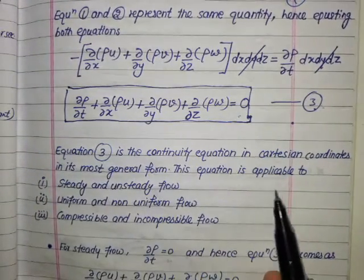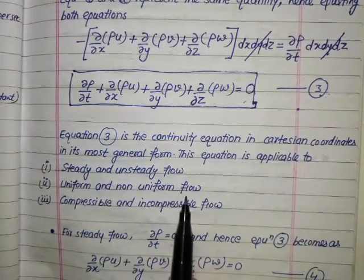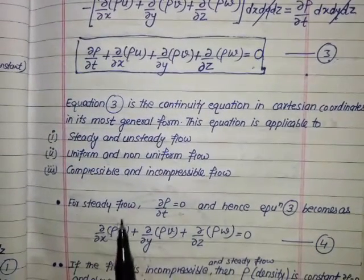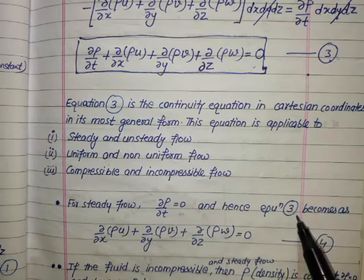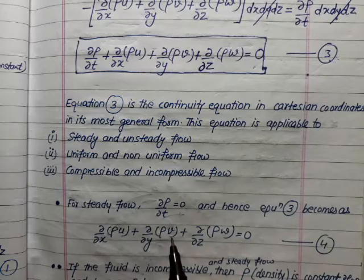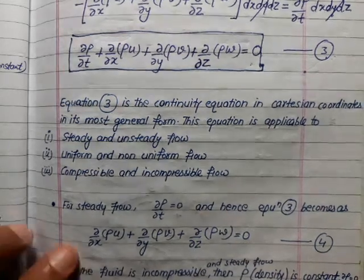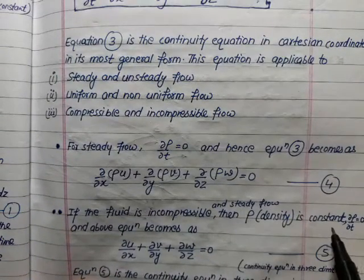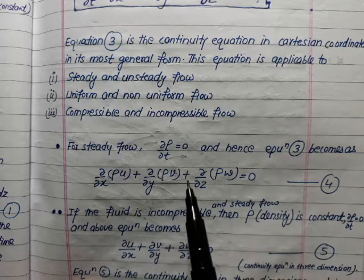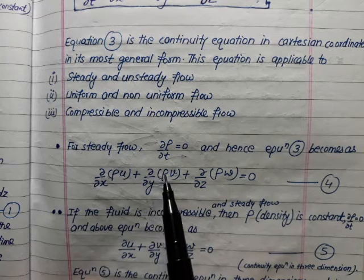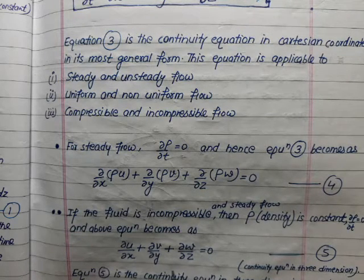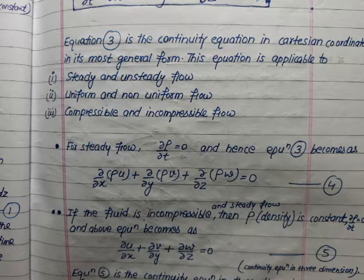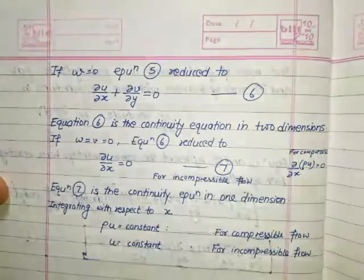In its most general form, equation 3 is applicable to steady and unsteady flow, uniform and non-uniform flow, and compressible and incompressible flow. For steady flow, ∂ρ/∂t = 0, reducing equation 3 to ∂(ρu)/∂x + ∂(ρv)/∂y + ∂(ρw)/∂z = 0. For steady incompressible flow, ρ is constant, so ρ cancels, giving ∂u/∂x + ∂v/∂y + ∂w/∂z = 0. This is equation 5 — the continuity equation for steady incompressible flow.